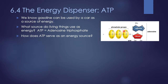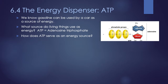Adenosine is a sugar group — ribose — hooked to a nitrogen group called adenine. When you put this nitrogen and the sugar together, they call that adenosine. The triphosphate part: tri means three, and phosphate means a phosphate group. So ATP has three phosphate groups on it. Let's look at how ATP serves as an energy source.